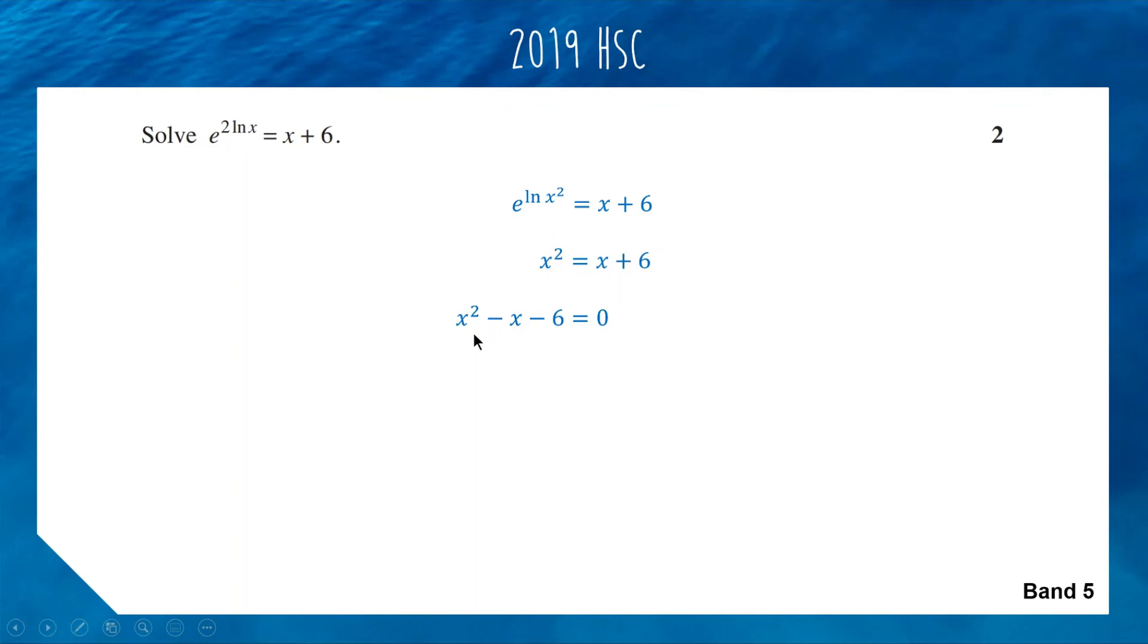By knowing your logarithm properties, you can turn this from an exponential equation into a quadratic equation, which is much easier to solve. So 2 up in the power, e to the log cancel off. Now we solve this quadratic with a slight twist. Bring it all on one side: x squared minus x minus 6 equals 0. We can factorize with minus 3 and positive 2. So we have x minus 3, x plus 2 equals 0. We get two solutions: x equals 3 and x equals minus 2.